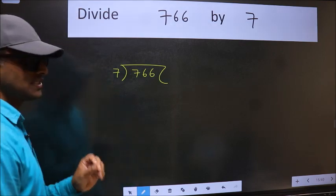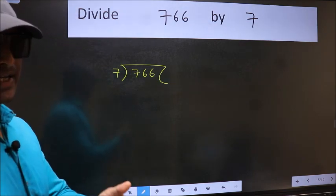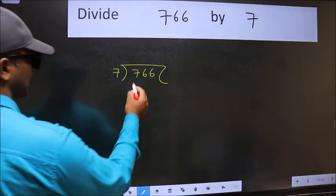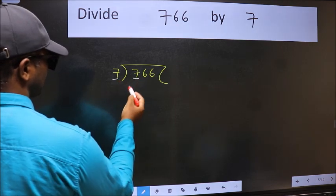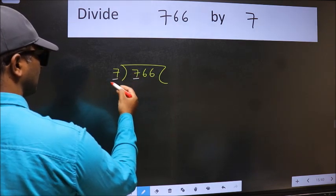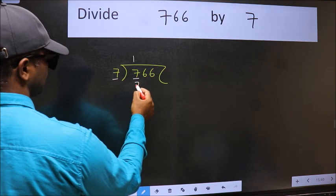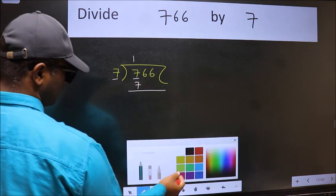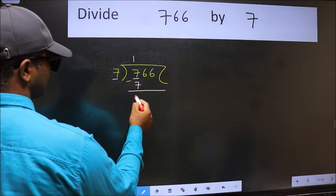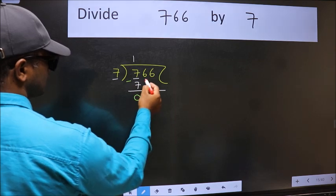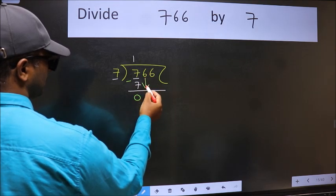This is step 1. Here we have 7 and here 7. When do we get 7 in the 7 table? 7 times 1 is 7. Now we subtract and get 0. After this, bring down the next number, which is 6.